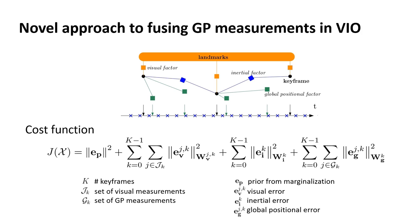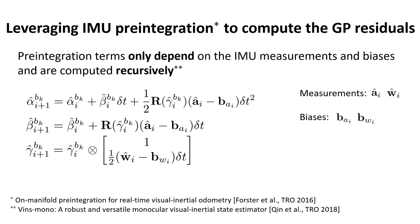To compute the inertial and global errors, we use the well-known IMU preintegration theory. The IMU preintegration theory allows us to save precious computational resources by removing the need of repropagating the states every time their linearization point changes during optimization. This is achieved by defining the preintegration terms which describe the relative motion between two consecutive keyframes. They only depend on the IMU measurements and biases.